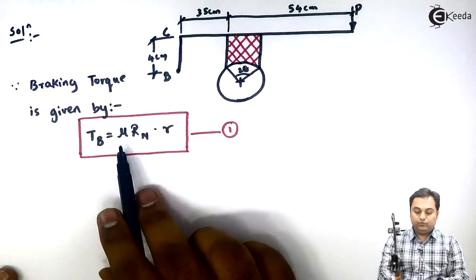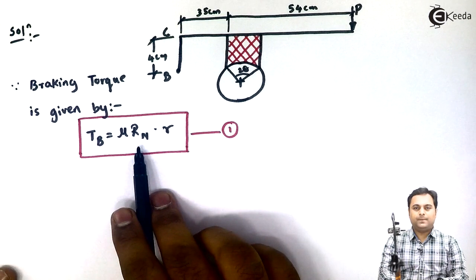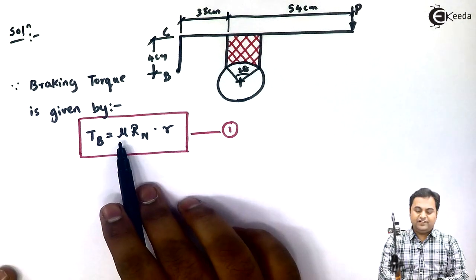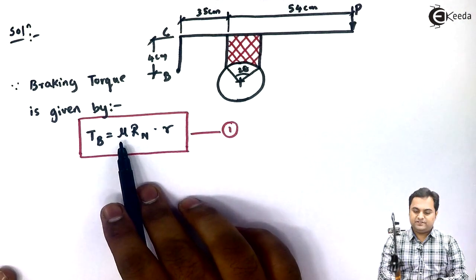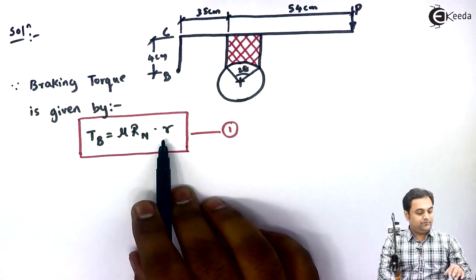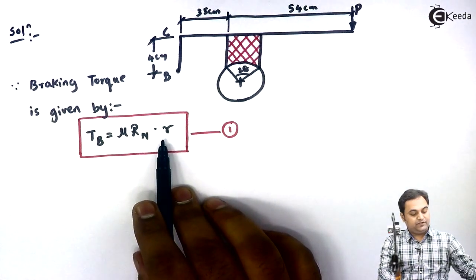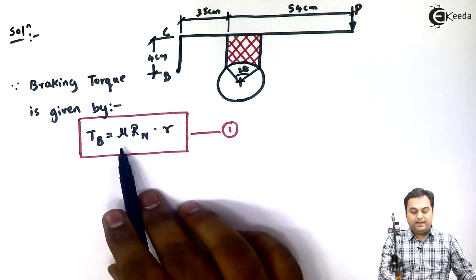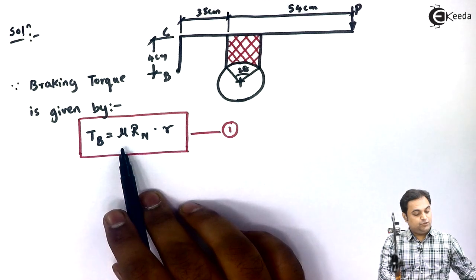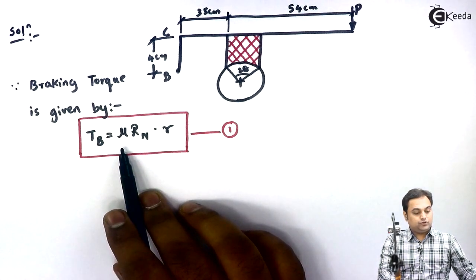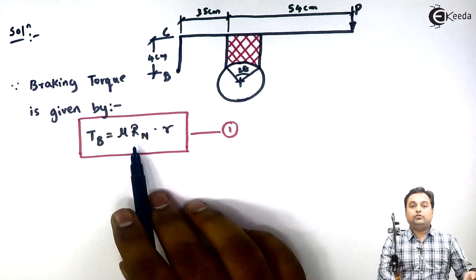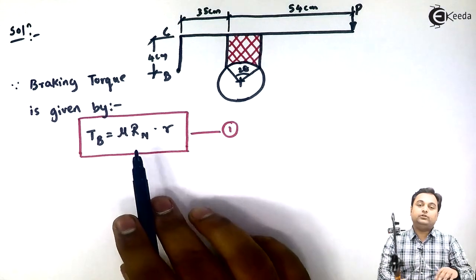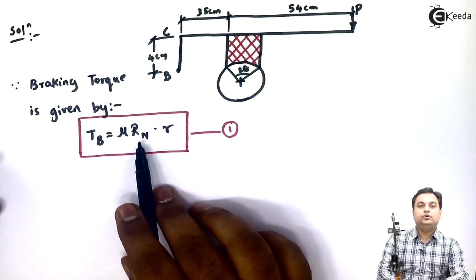We have to calculate R_N. The value of mu is given and the radius of the drum is 0.15 meters, and mu is 0.4 — so both values are known. The only thing we don't have in this problem is R_N.